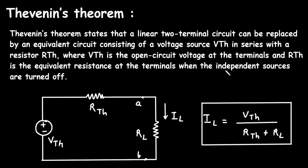When we turn off independent sources, we replace them by their equivalent resistance. When we turn off an independent voltage source, we replace it by a short circuit, and when we turn off an independent current source, we replace it by an open circuit. So remember: for voltage source, short circuit; for current source, open circuit.